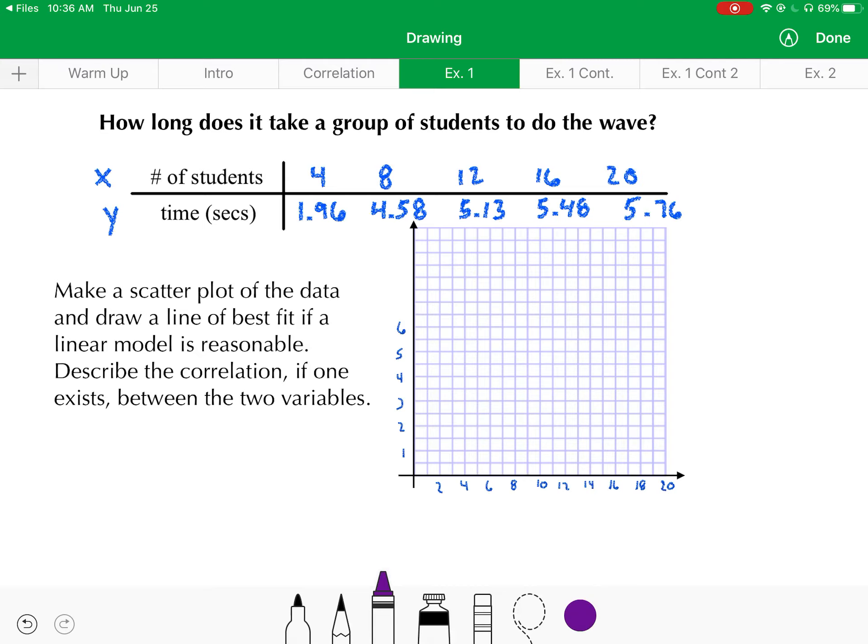Normally, if we were in the classroom, I would have us complete this together to collect some data, but for the video purpose, I'm taking data from a class that I've already done this for. Notice we're looking at how long it takes a group of students to do the wave. What I did here in a previous class is I went around the room and had a certain number of students complete the wave like you do at a baseball game, and I timed it, and here you see the data for it. We had a total of 20 students completing it when it was all said and done. What we'd like to do with this data is make a scatter plot, draw a line of best fit if a linear model seems reasonable for the data, and then describe the type of linear correlation if it exists between the two variables.